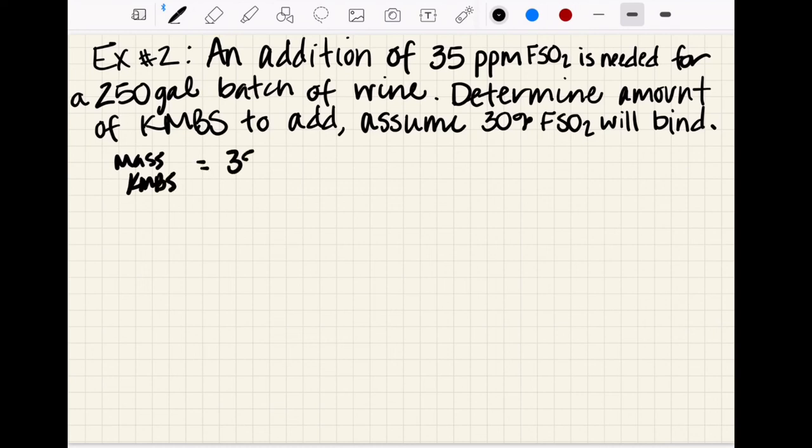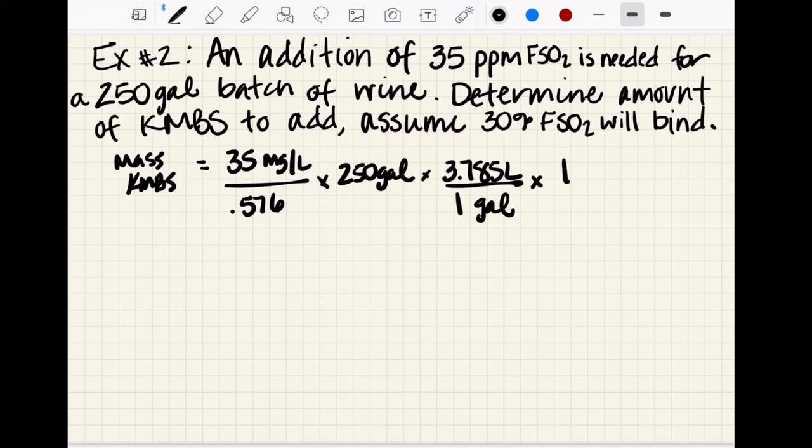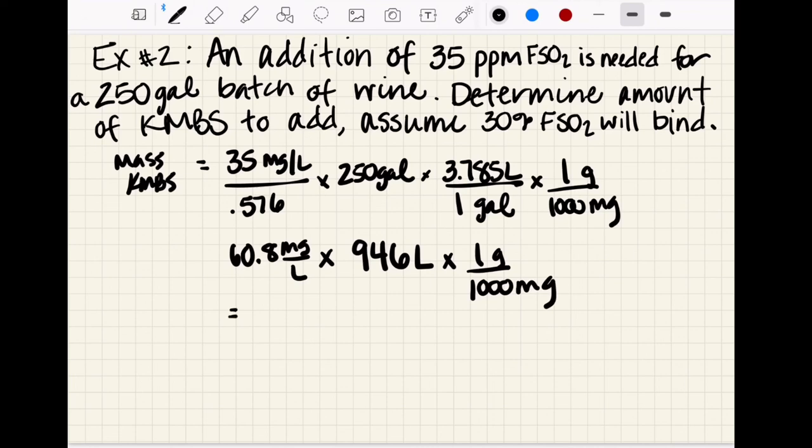We can start our equation here: mass of KMBS is equal to 35 milligrams per liter divided by 0.576, and we've got 250 gallons times 3.785 liters per gallon, and then our grams to 1000 milligram conversion. So 35 divided by 0.576 will give us 60.8 milligrams per liter, 250 gallons times 3.785 liters per gallon gives us 946 liters, and we end up with 57.5 grams KMBS to add.